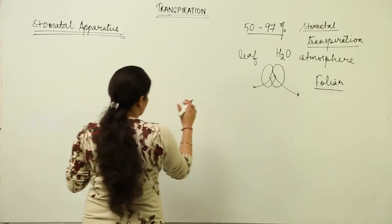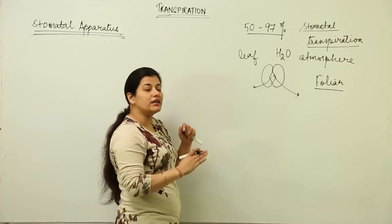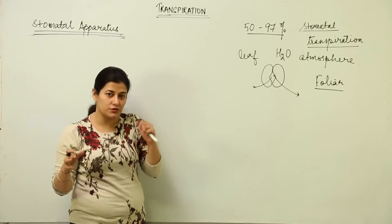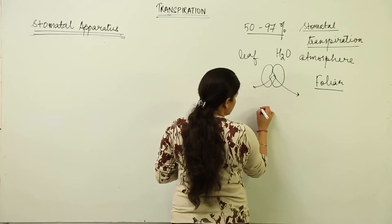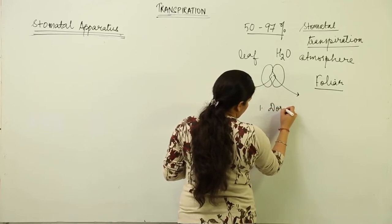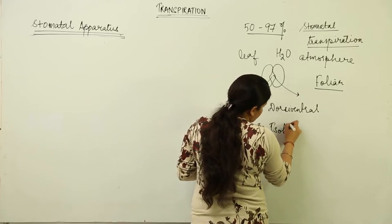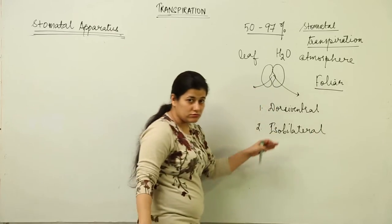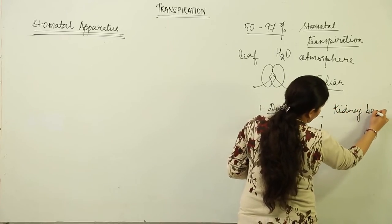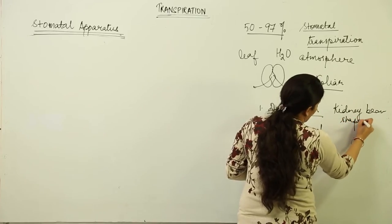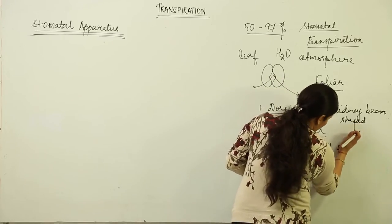In a dicot leaf, there is palisade parenchyma and spongy parenchyma, and stomatas are found on the lower surface. In monocot leaves, both upper and lower epidermis are abundant in stomatas. There are two types of stomatal apertures: dorsiventral type leaves have stomata on the lower surface with kidney bean-shaped guard cells, while isobilateral type leaves have dumbbell-shaped guard cells.